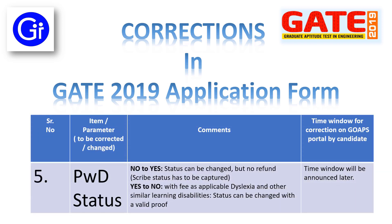The fifth parameter to be corrected or changed is PWD status. The options here are No and Yes, so you can change from No to Yes and Yes to No. If you want to change from No to Yes, the status can be changed but no fee will be refunded. If you want to change from Yes to No, then you need to pay a fee applicable to dyslexia and other similar learning disabilities. Status can be changed with valid proof only. The time window for correction on the GOPS portal will be announced later.